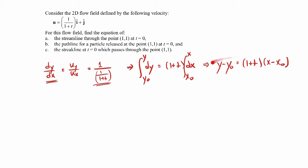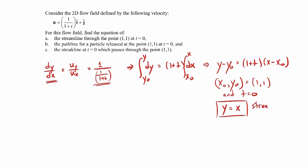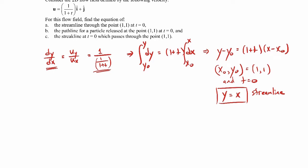This holds true for any point x-naught, y-naught, and any time. But we're specifically interested in the streamline through the point (1,1) at t equals 0. When x-naught, y-naught is equal to (1,1) and t equals 0, the line is just y equals x. That's our streamline for those conditions. The main thing to remember for a streamline is that the slope of the streamline and the slope of the velocity vectors are the same.